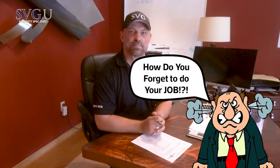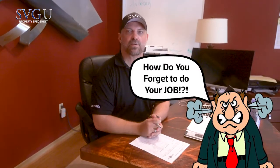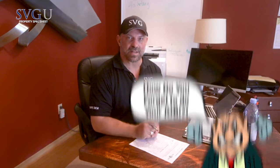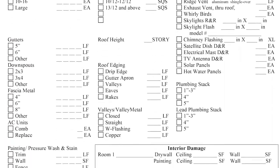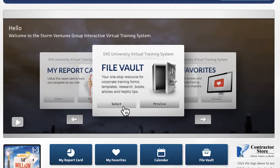Welcome back guys. One of the biggest complaints owners have is when their sales associates or project managers go out to job sites and forget to properly spec out the roof and the property to write that estimate later on. This problem will be solved by using a simple property spec sheet, which you can download in your virtual file vault. Go ahead and press pause and download this from your virtual file vault.